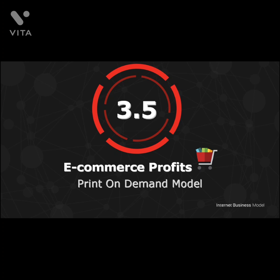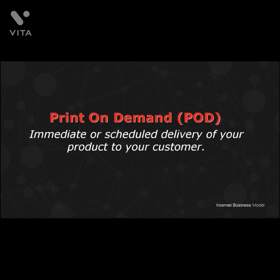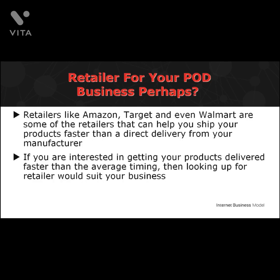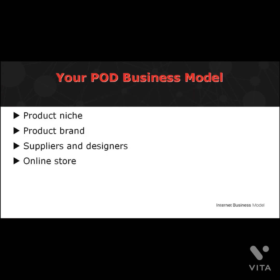The first type of e-commerce business you can do is print-on-demand or POD. An on-demand delivery is the immediate or scheduled delivery of your product to your customer, initiated right after they make their order. Many of the largest retailers in the world have realized they can assist in getting products to customers quicker — retailers like Amazon, Target, and even Walmart can help you ship products faster. For your POD to work, you must first have: one, a product niche — clothing, appliances, bags, or anything you find interesting and demanding; two, a product brand; three, a supplier and designer — list them down so you won't have to be in constant search; four, an online store — a Shopify store, Facebook, or Instagram account.